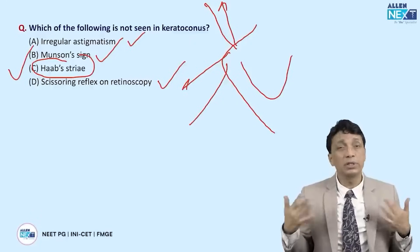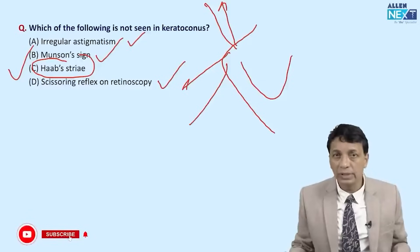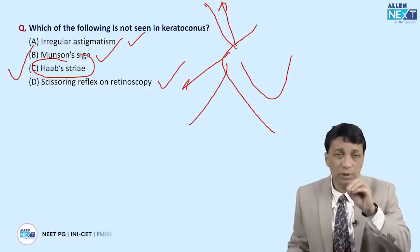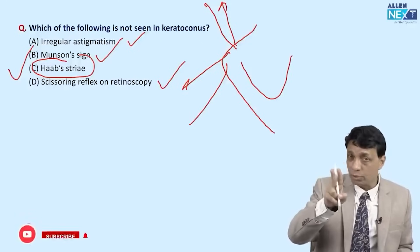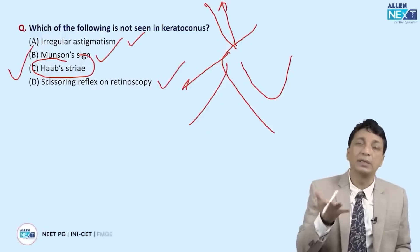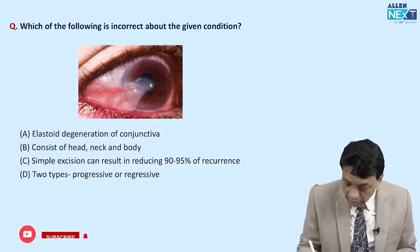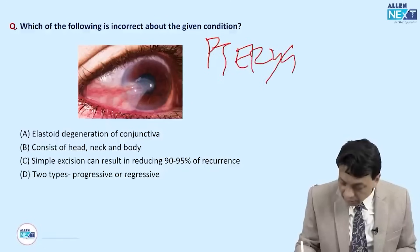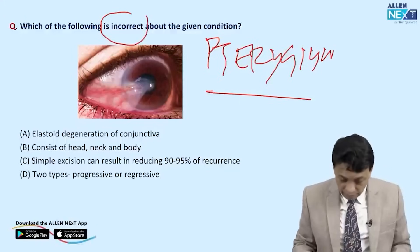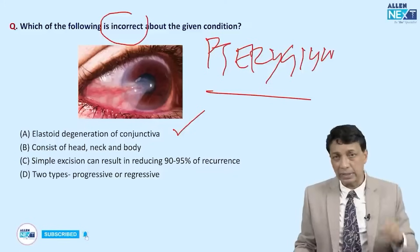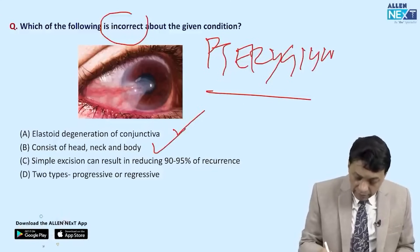Be careful with negative questions: 'all true except,' 'most unlikely,' 'least likely,' 'most unlikely.' Read the question carefully — at least three times. The answers are often given in the question itself. The next question shows a triangular encroachment onto the cornea — pterygium, meaning 'bird's wing.' The question asks what is incorrect. Elastoid degeneration of the conjunctiva: correct. It has a head, neck, and body: correct. It can be progressive or regressive: correct.